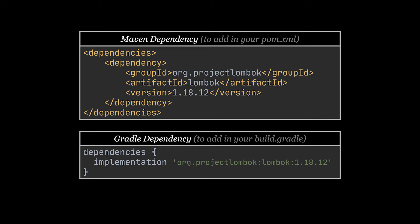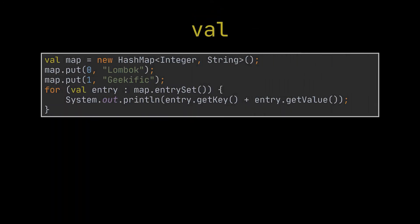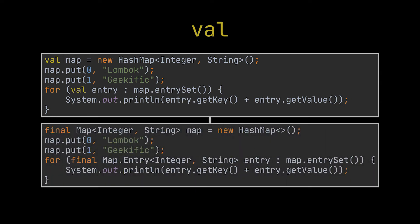Let's start with something simple: val variables. Val can be used as the type of a local variable declaration instead of actually writing the type. In the example you can see we are creating a map and then looping over the entries of this map without worrying what the types should be. Without Lombok, that is what the code producing the same output would have looked like.